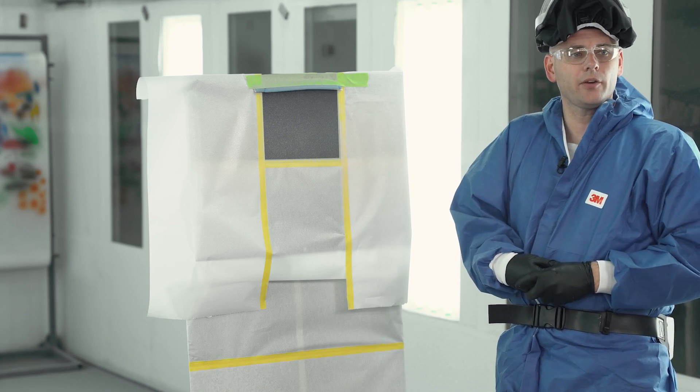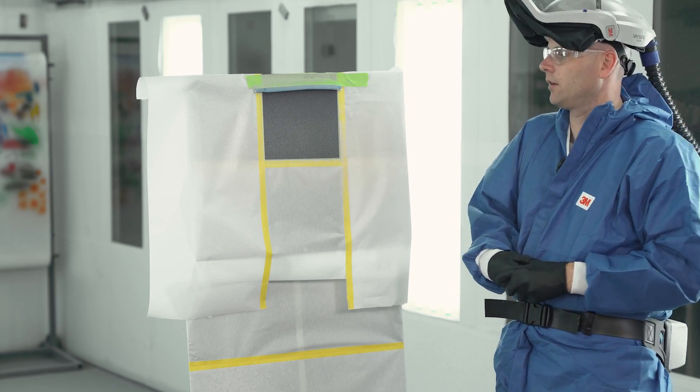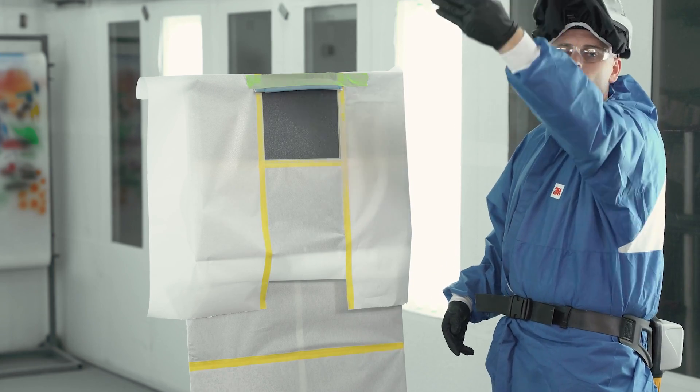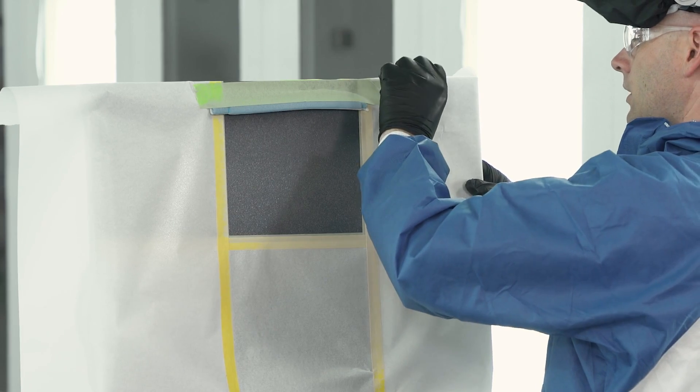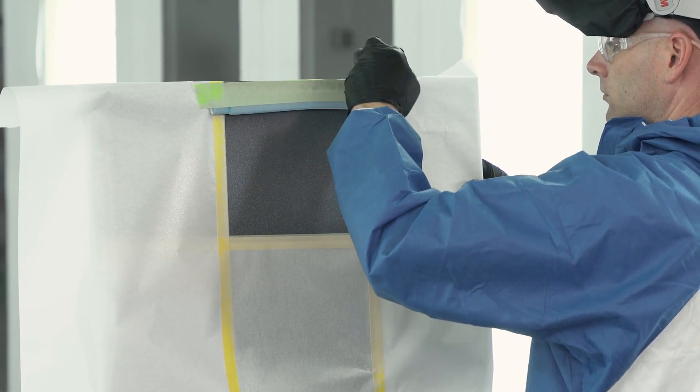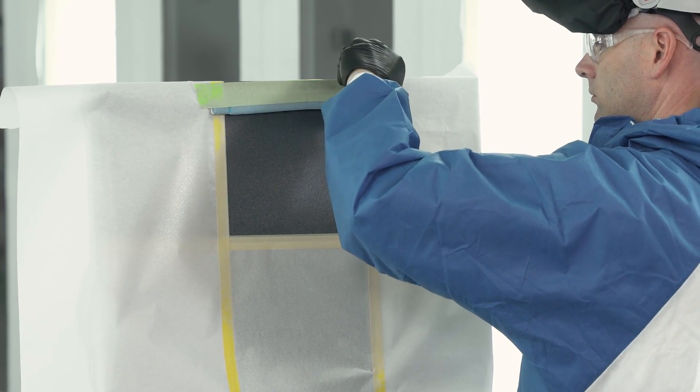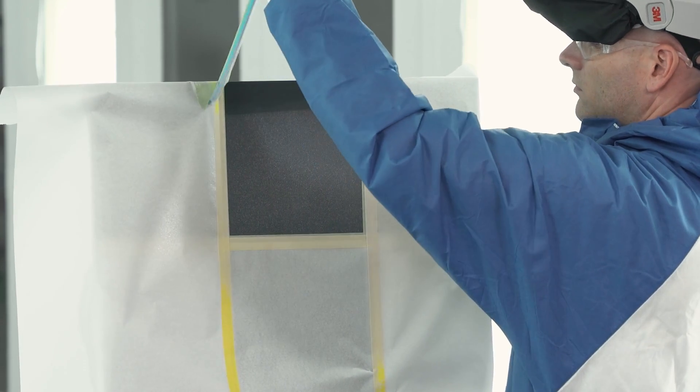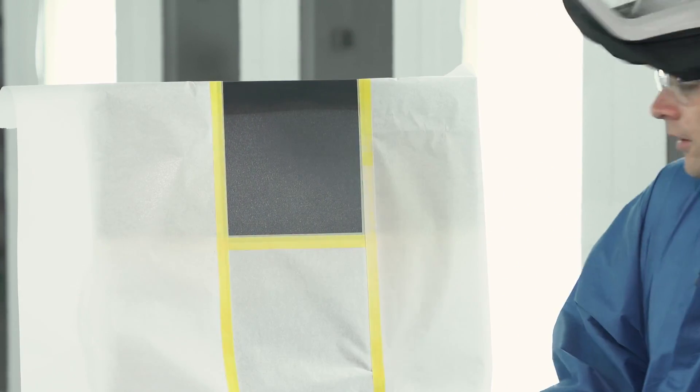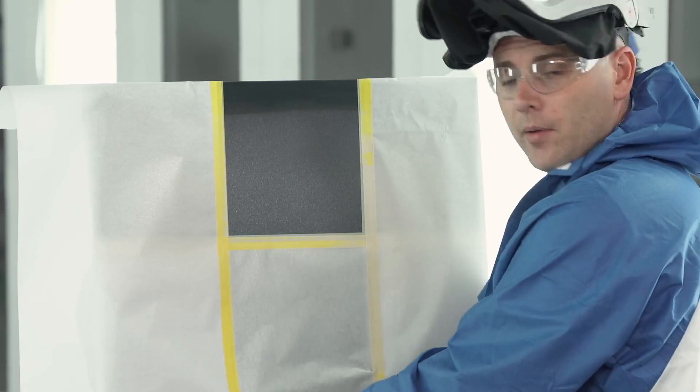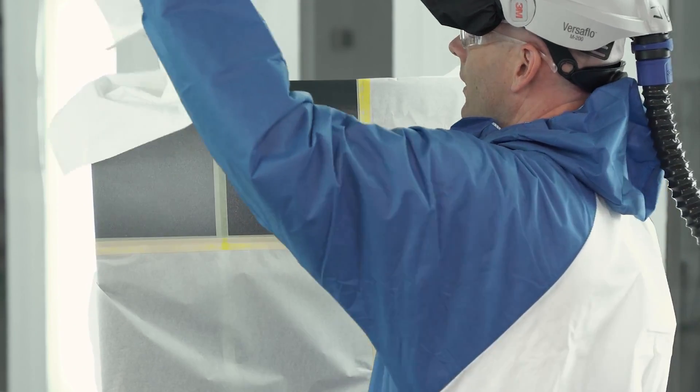So now that it's properly flashed, we can go ahead and peel our masking. Just like before, we want to peel away from our freshly sprayed area so we don't mark anything up. So I'll unmask the area that we sprayed before, and you'll see the difference from line to line.